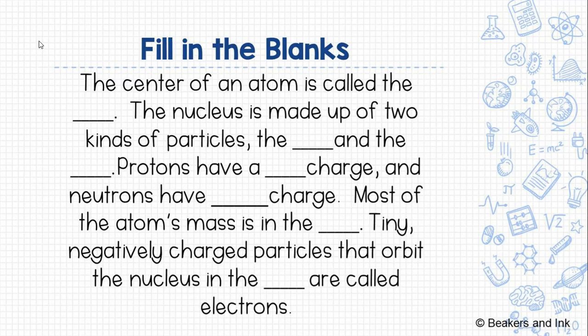The center of the atom is called the nucleus. The nucleus is made up of two kinds of particles: the proton and the neutron. Protons have a positive charge, and neutrons have a neutral charge. Most of the atom's mass is in the nucleus. Tiny negatively charged particles that orbit the nucleus in the electron cloud are called electrons. Great job.